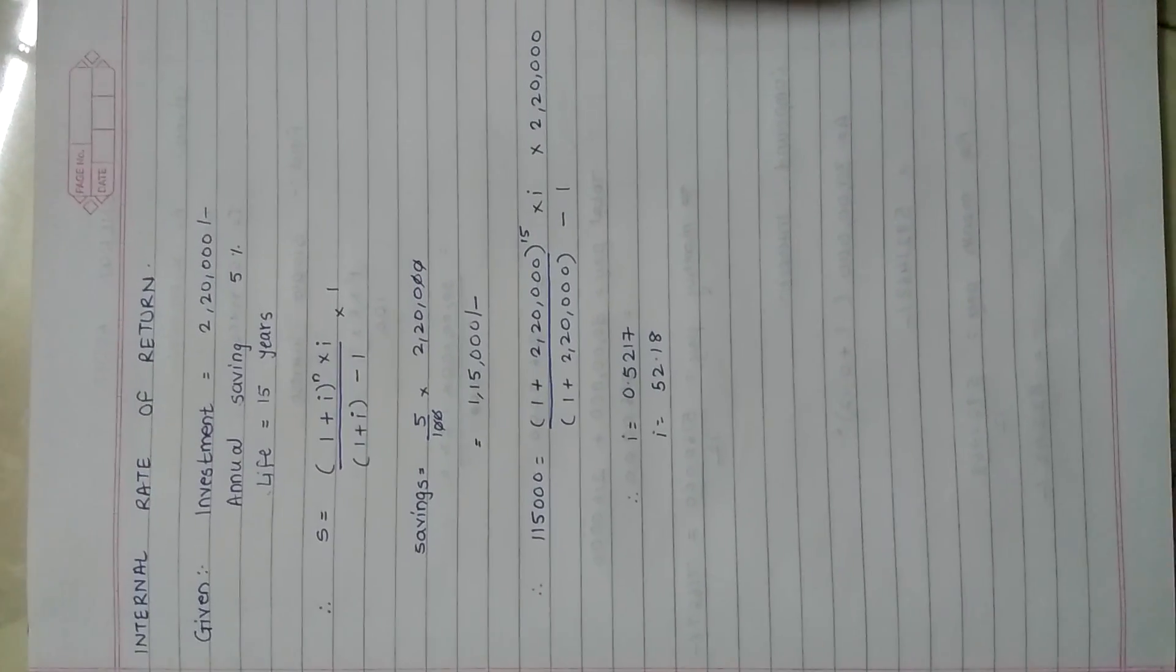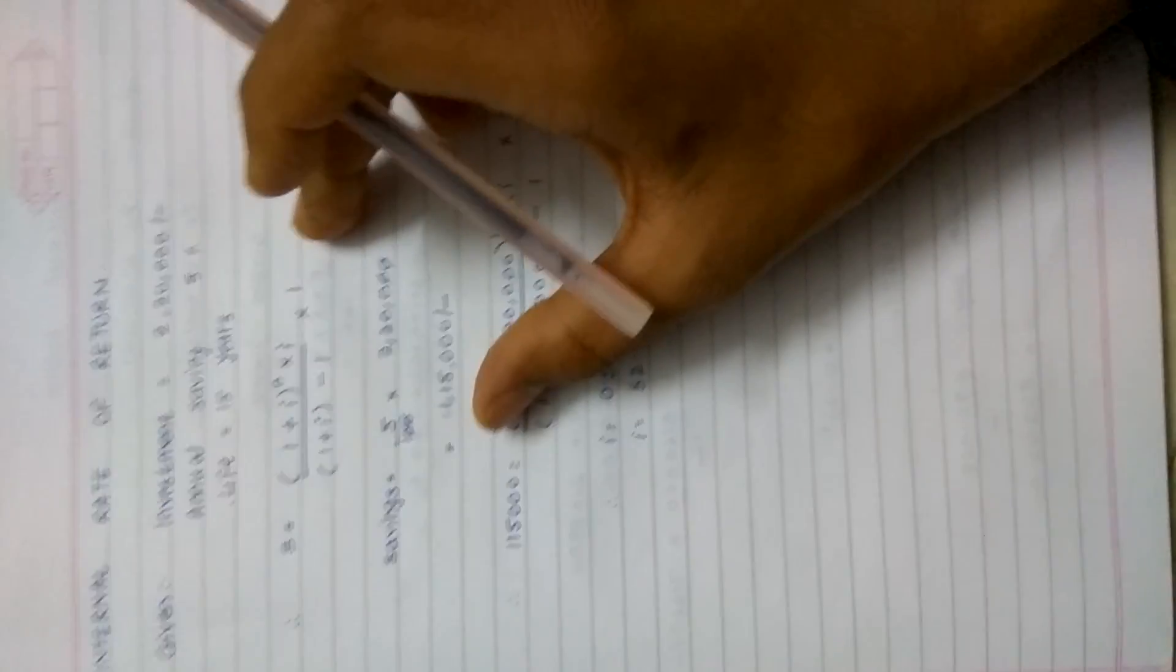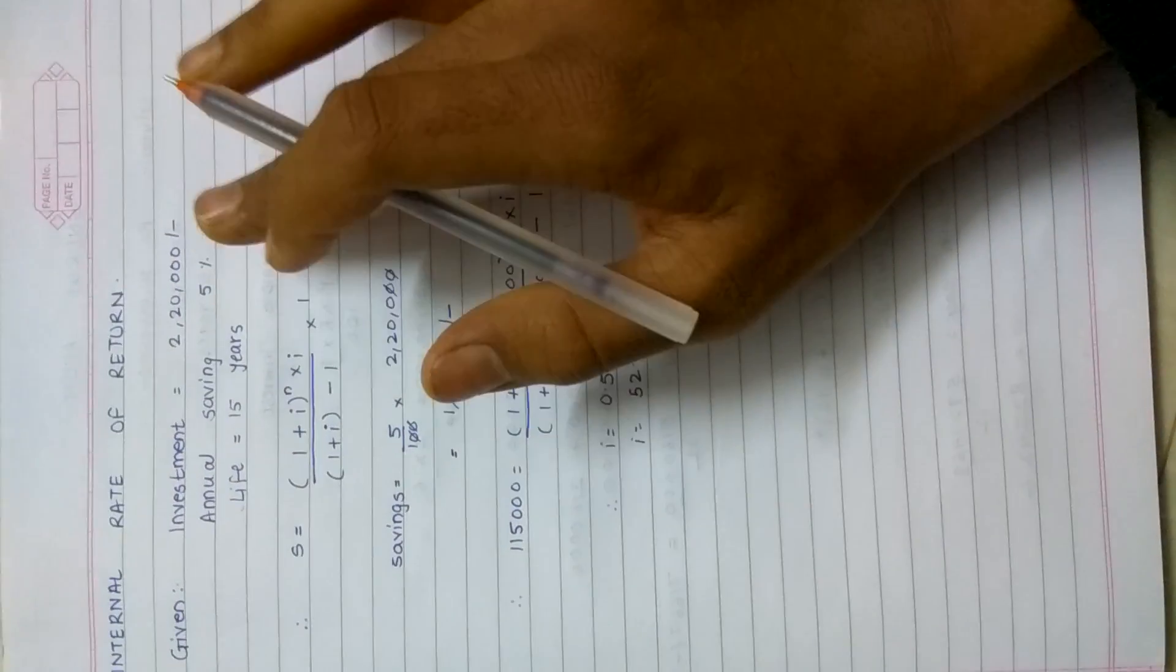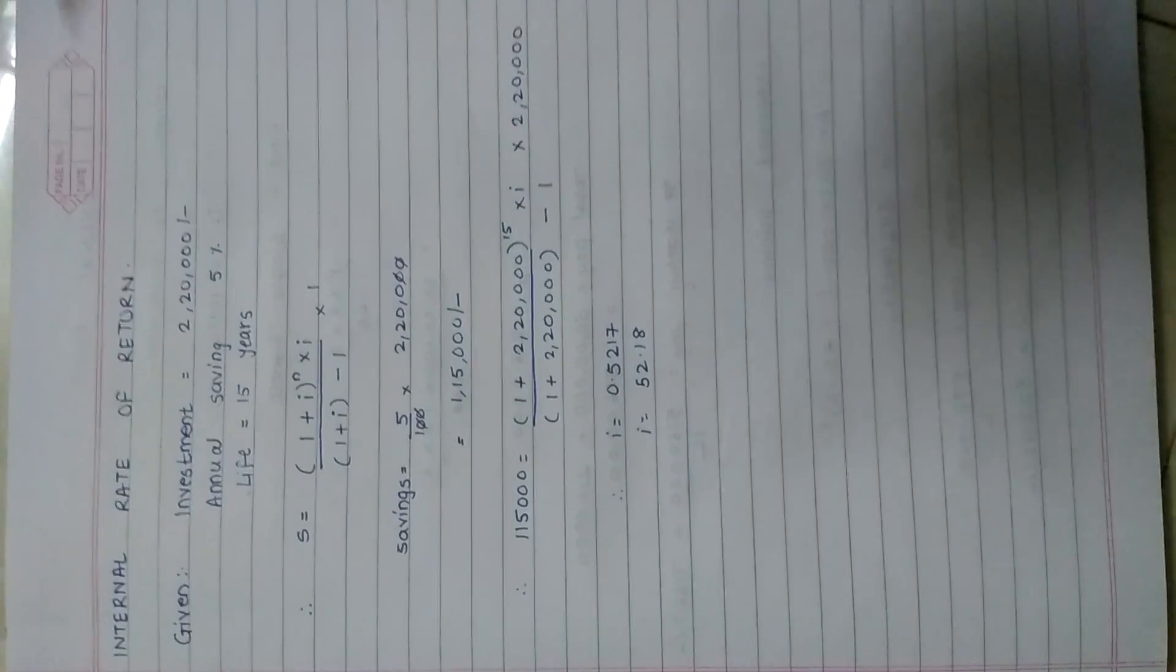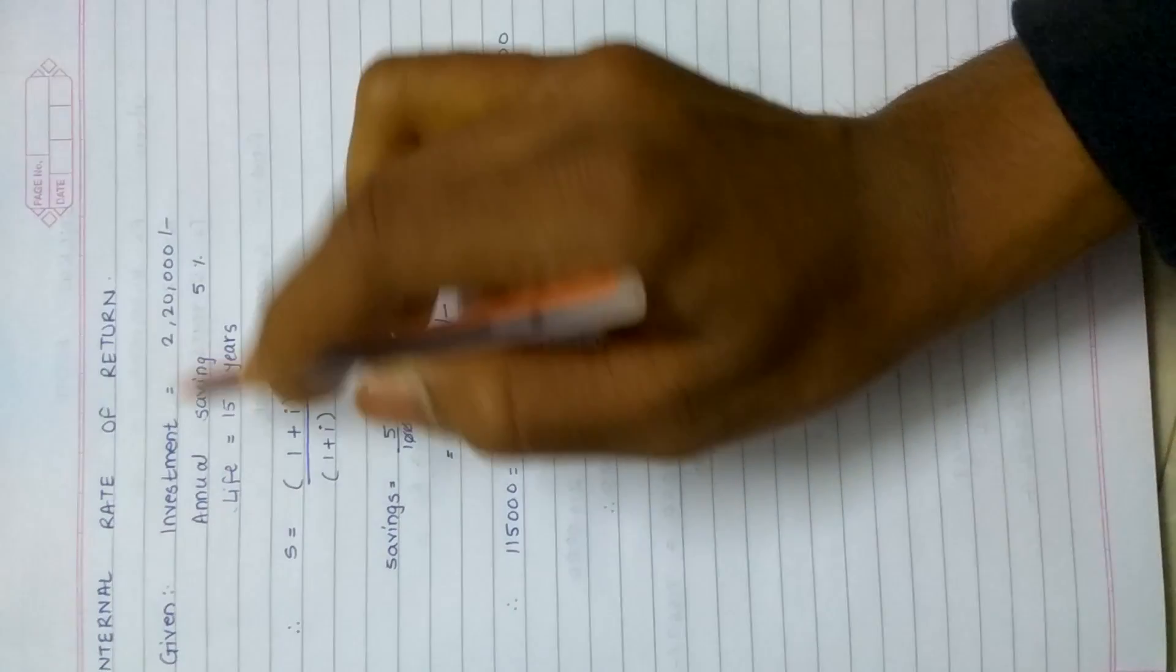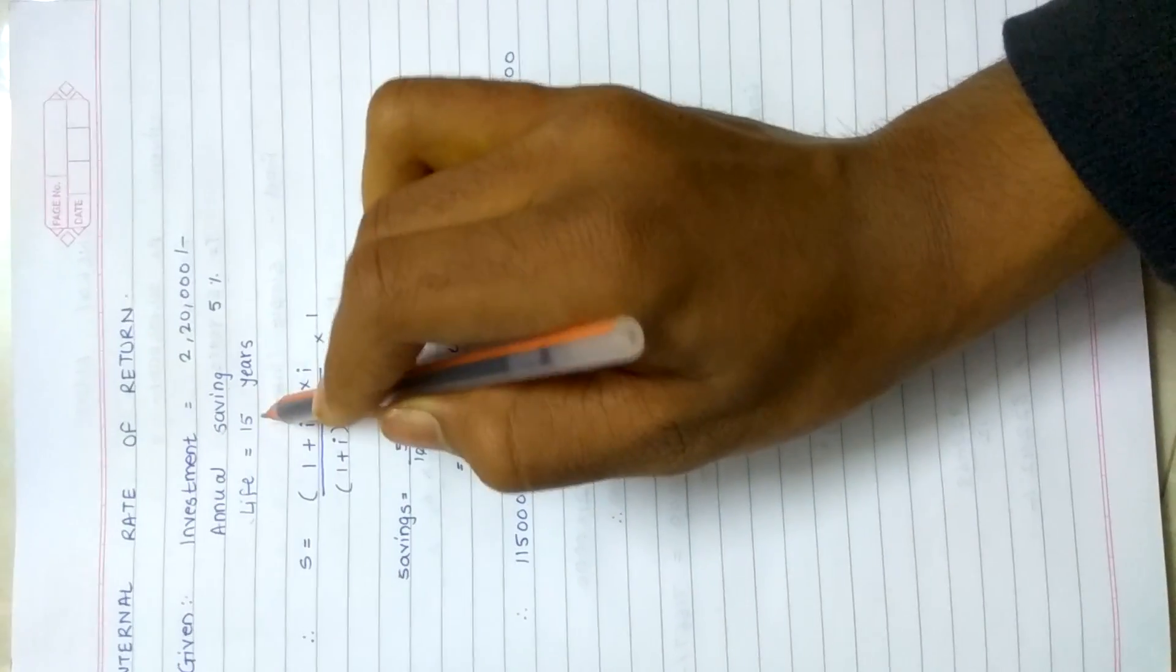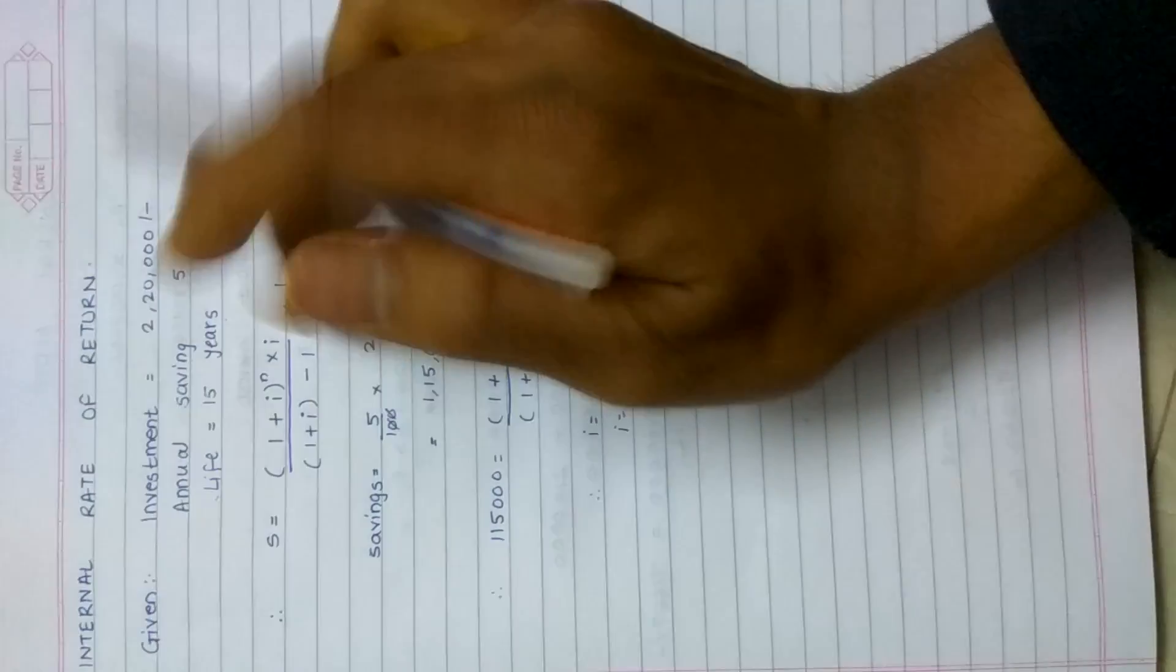In this numerical you have to find out the internal rate of return, that is at what rate your investment will break even and start making profit. What was given: investment was 2 lakh 20 thousand, annual saving was 5 percent, and life was 15 years. You have to calculate internal rate of return.